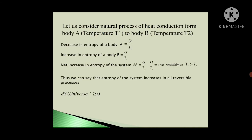We also call this the Principle of Increase of Entropy. Now consider the natural process of heat conduction from hotter body A to colder body B. The hotter body is at temperature T1 and the colder body is at temperature T2. The decrease in entropy of hotter body A equals Q/T1, since it gives heat to the colder body. The increase in entropy of body B equals Q/T2, since it absorbs heat. So the net increase of entropy of the system is dS = Q/T2 - Q/T1. This is a positive quantity since T1 > T2, confirming that entropy of the system increases in all irreversible processes.